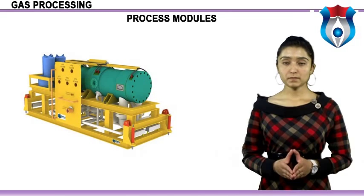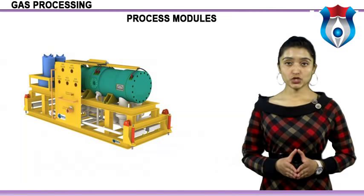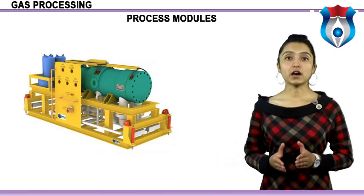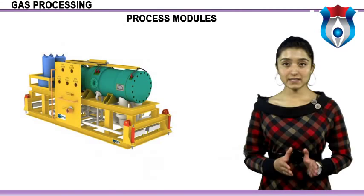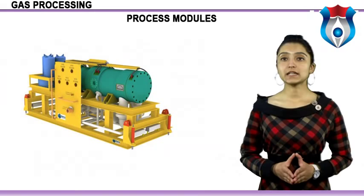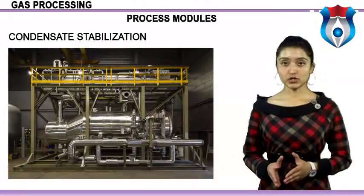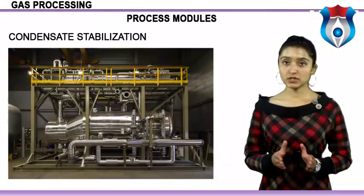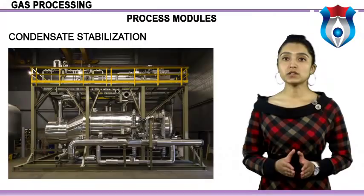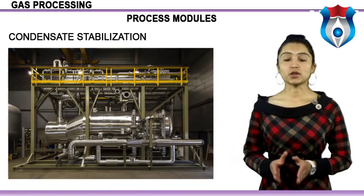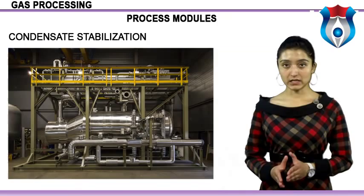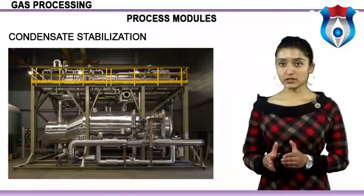Acid gas treating is the next process module. In addition to heavy hydrocarbons and water vapor, natural gas often contains contaminants that must be removed: carbon dioxide CO2, hydrogen sulfide H2S, and other sulfur-containing species such as mercaptans. Condensate stabilization is the process of increasing the amount of intermediate components C3 to C5 and heavy C6+ components in the condensate, while separating the light hydrocarbon gases — methane and ethane — from the heavier hydrocarbon components C3+.